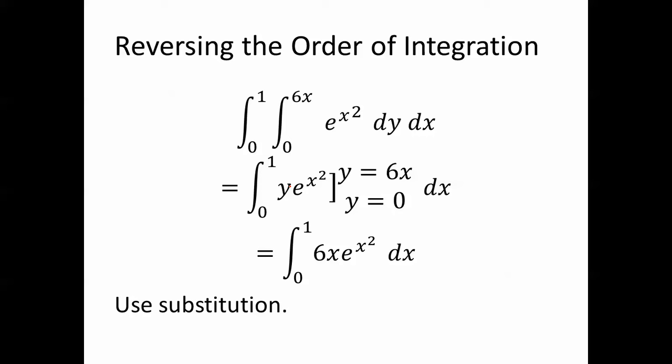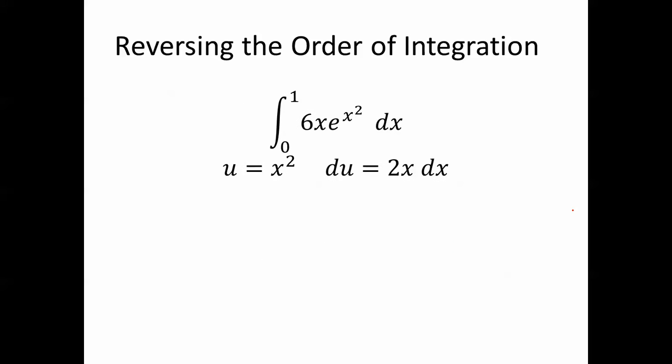We use substitution for this, because whenever we're integrating e to some stuff, unless it's really simple, we use substitution, and we just let u be the stuff. In this case, u equals x squared, du is 2x dx. So we can write this as 2x dx, just take this 6 and write it as 3 times 2, and pull the 3 to the outside. So now we have 3 times the integral from 0 to 1 of 2x e to the x squared dx.